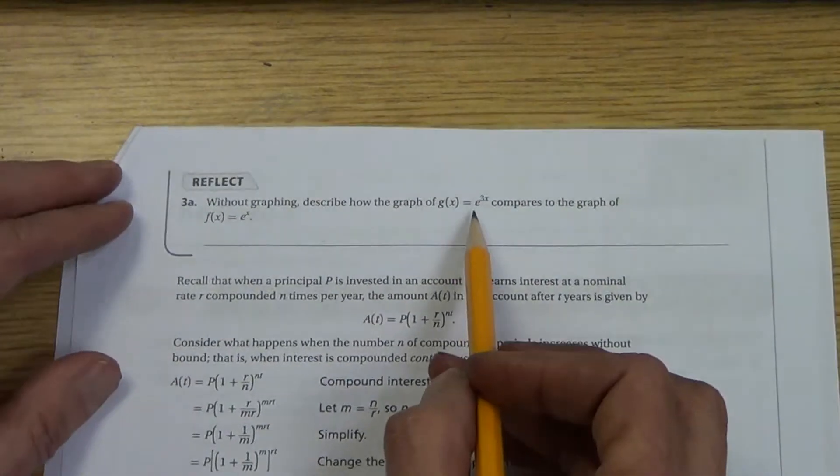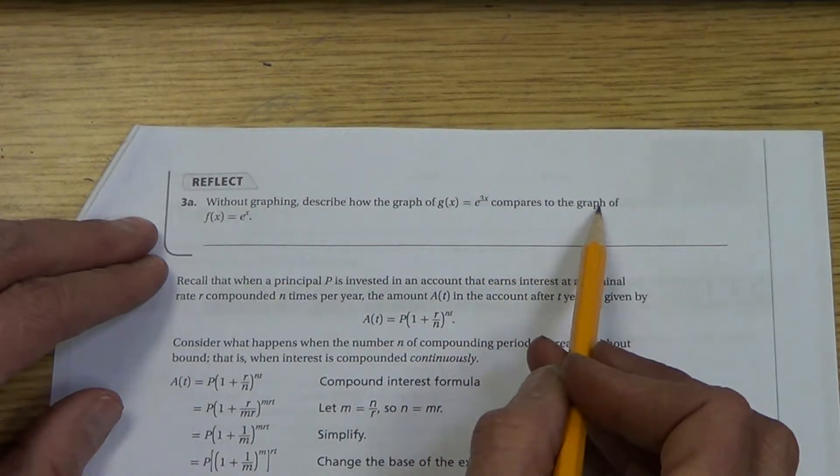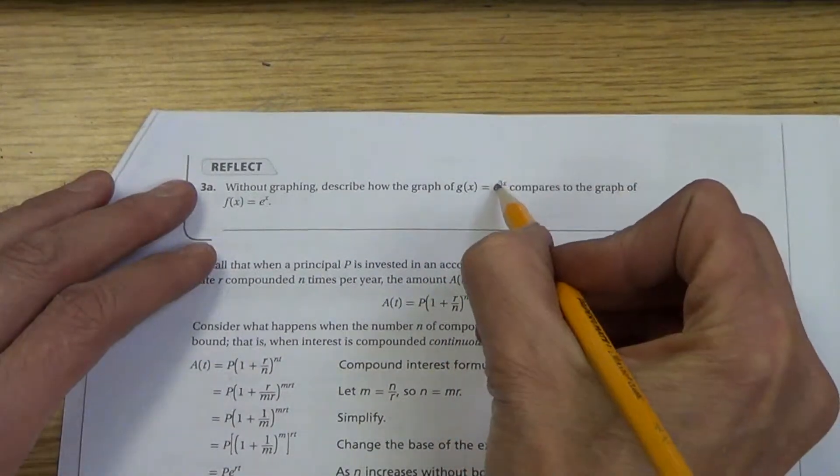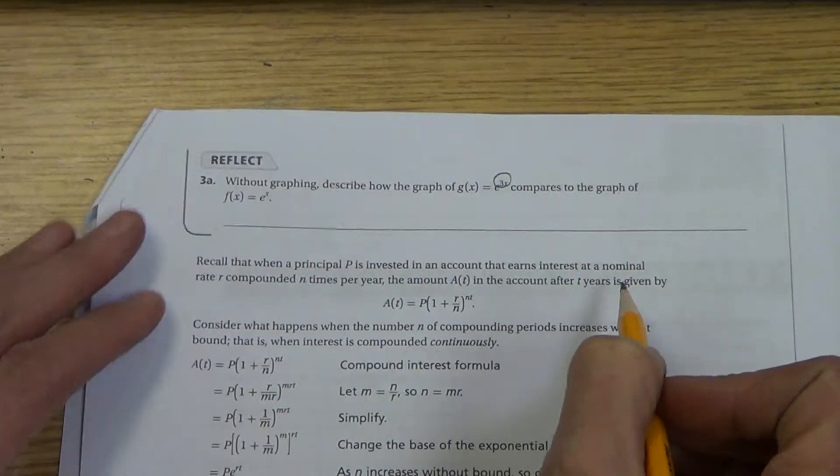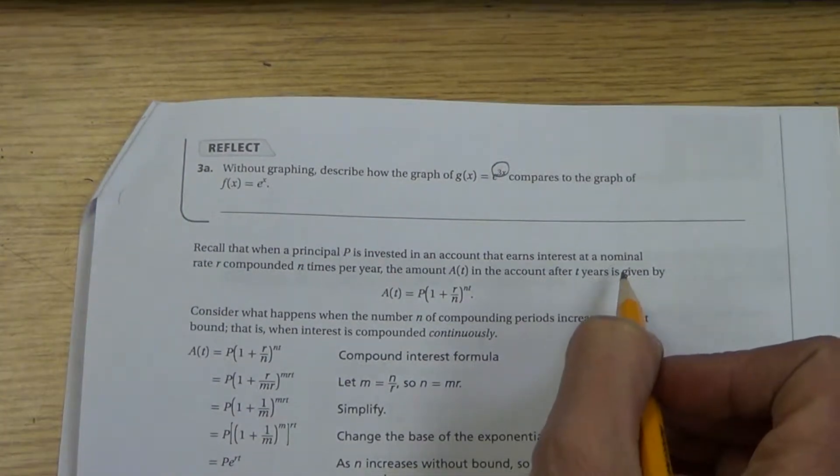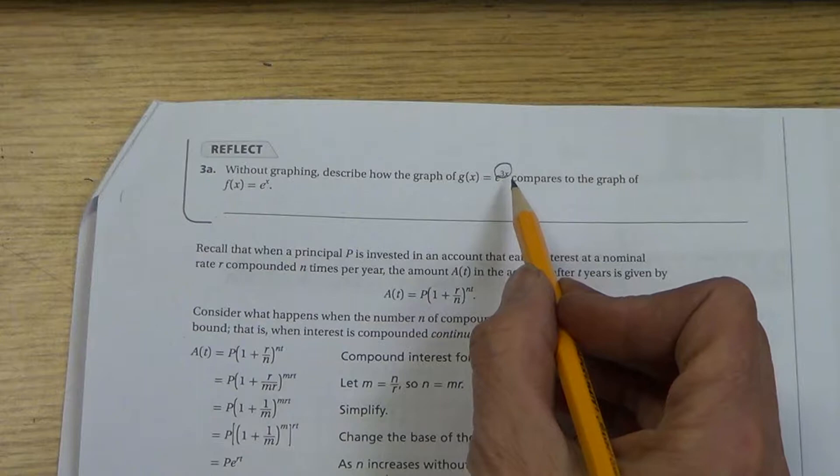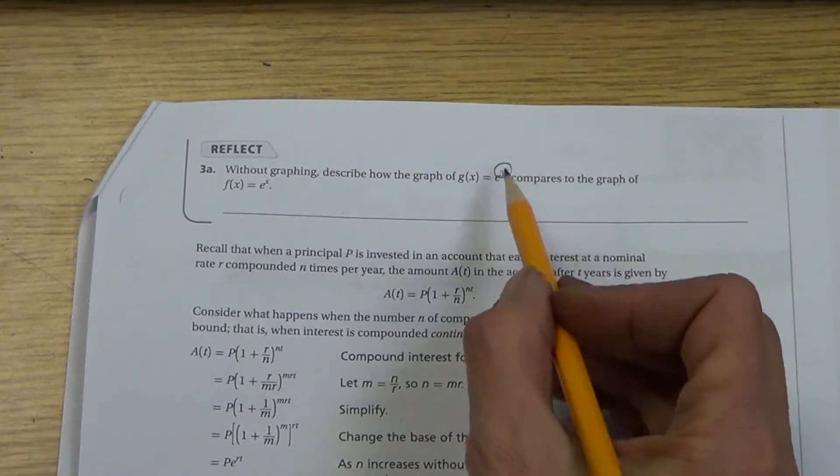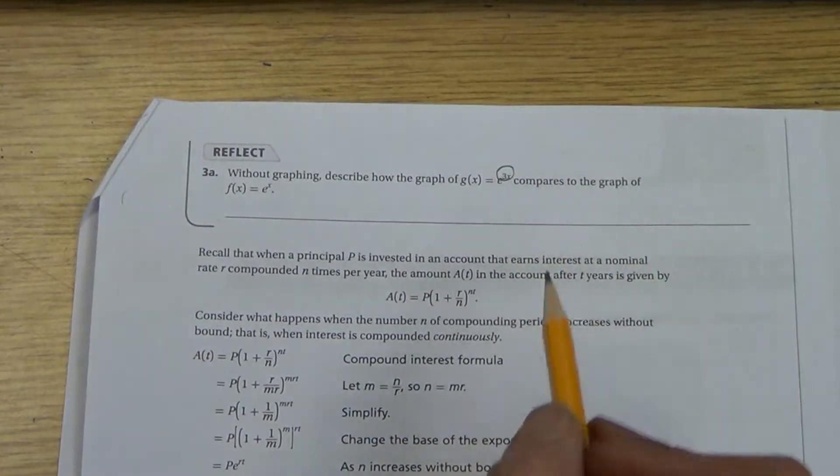Without graphing, describe how the graph E to the 3x compares to the graph of E to the x. Think of our last unit. That is a horizontal something. Go back to the last unit and watch that if you need to. Horizontal is different from vertical. So instead of being that whole number, you're going to use it as a fraction.